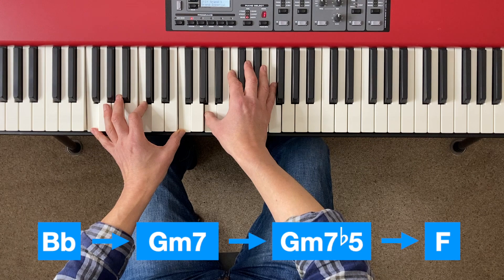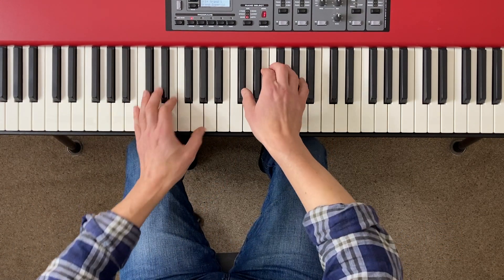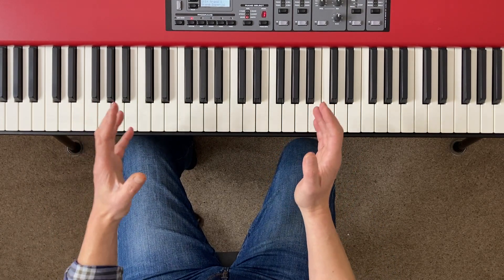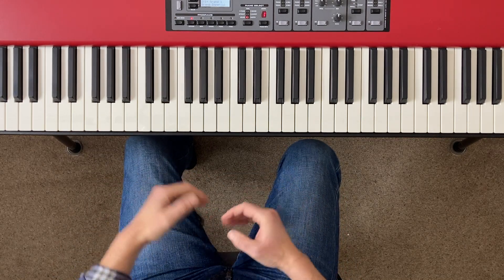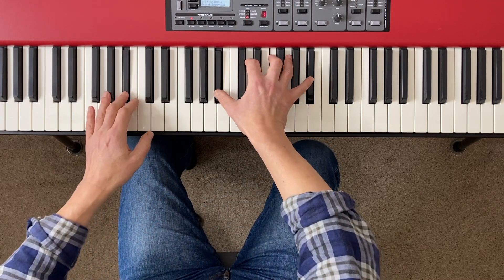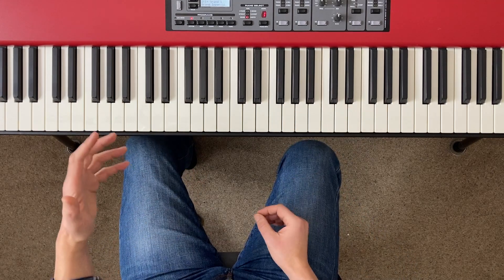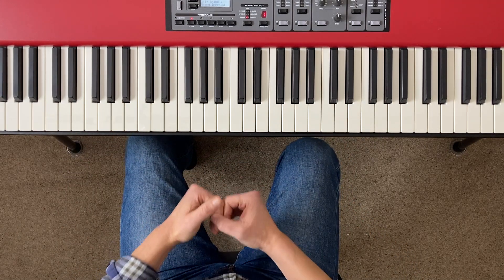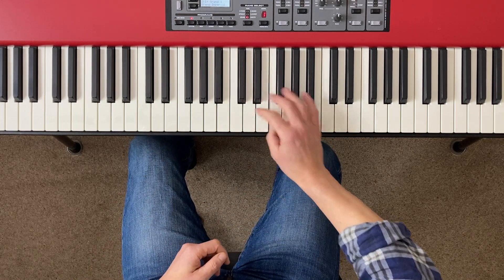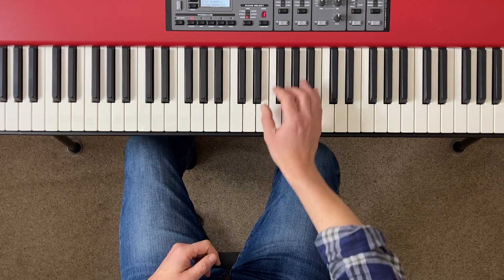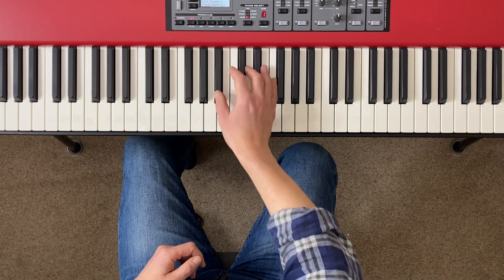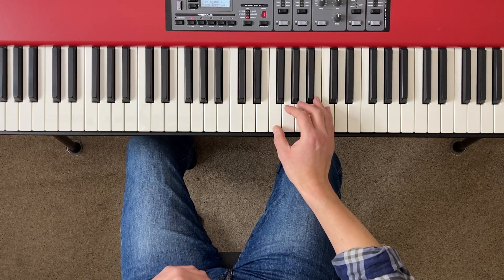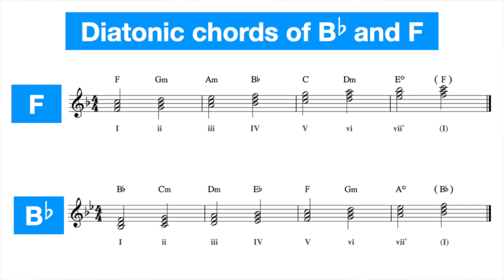That puts us pretty comfortably in the new key, F major, and we can start playing our F major song. Hopefully that sounded like a pretty smooth transition. Just to dig into some of the underlying theory, that is a variation of what we call a common chord modulation. What I've done is look at the two keys — B flat major and F major — and each of those keys has its own diatonic chords, the chords that grow naturally out of its scale. Here are the diatonic chords of B flat major, and here are the diatonic chords of F major, and I'm looking for a chord that the two have in common.